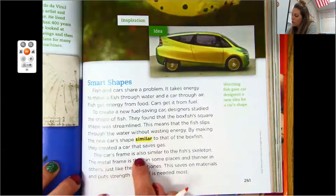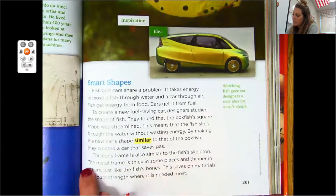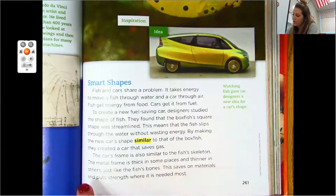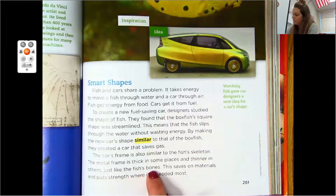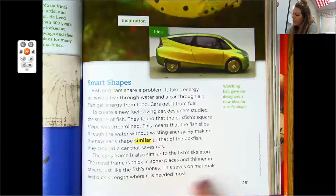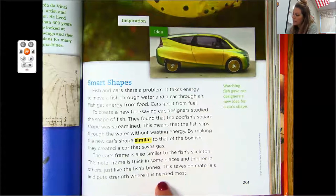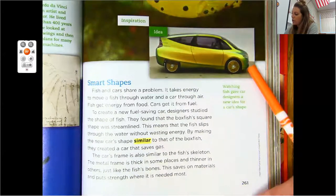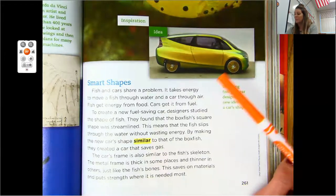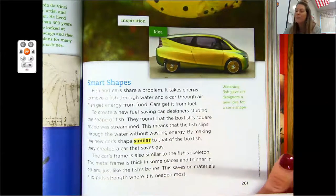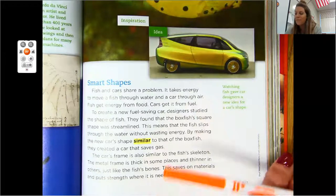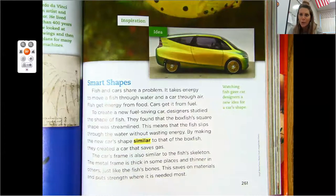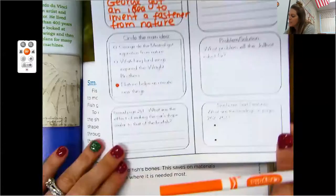The car's frame is also similar to the fish's skeleton. The metal frame is thick in some places and thinner in others, just like the fish's bones. This saves on materials and puts strength where it is needed most. Watching the fish gave car designers a new idea for a car shape. I would have never thought that a fish would be inspiration for a car. That is crazy. Maybe a boat, but not a car, right?